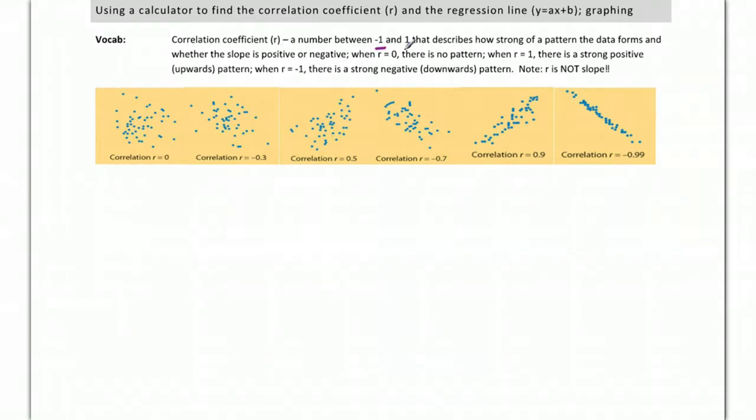It's a number somewhere between negative 1 and 1 that describes how strong of a pattern your data forms. That's the 0 to 1 part. Whether the slope is positive or negative will be the negative or positive part.